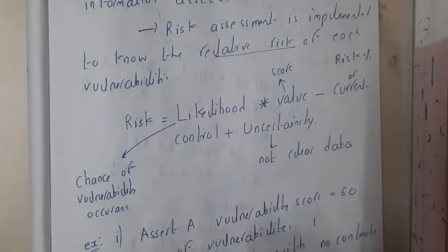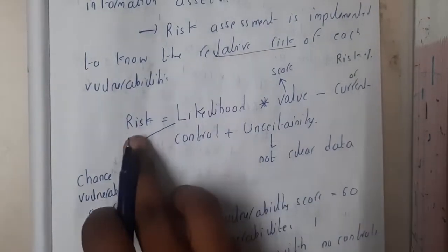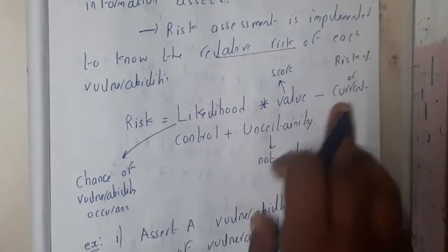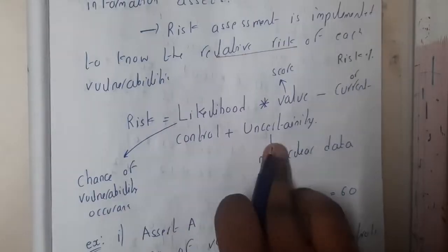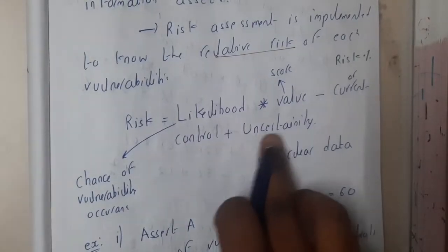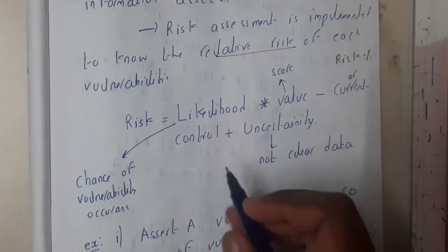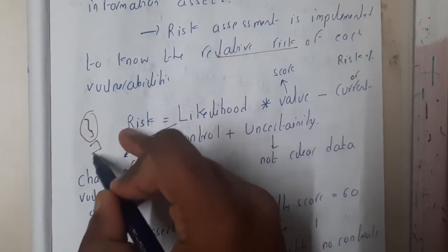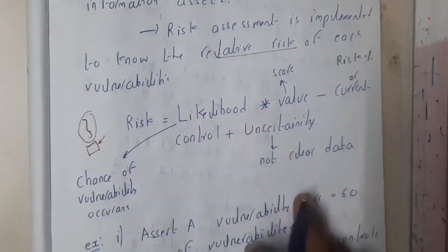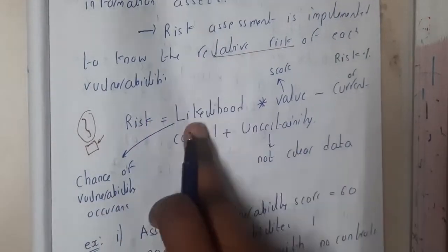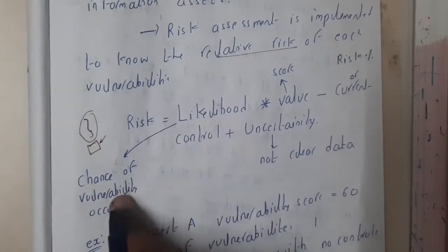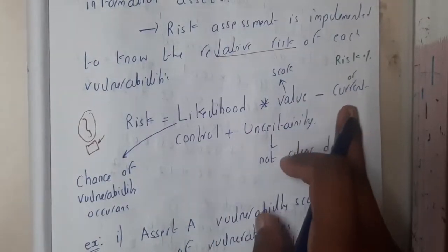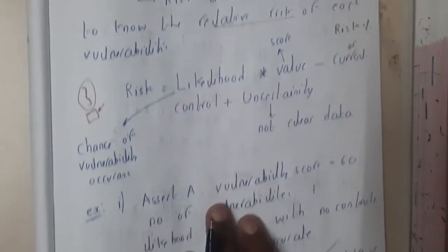We have basically one formula: Risk = Likelihood × (Value − Current Risk Percentage) + Uncertainty. Uncertainty is nothing but unclear or faulty data — we may not always have all clear data. Likelihood is nothing but the chance of vulnerability occurrences. Value is nothing but your score, and current risk percentage is the control value.